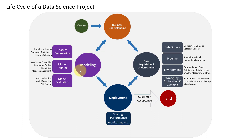Once the data is ready, we apply machine learning models. We can use models such as decision tree, random forest, or k-nearest neighbors. Since predicting diabetes is a classification problem, we can use many of the available classification algorithms.